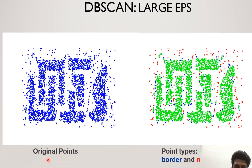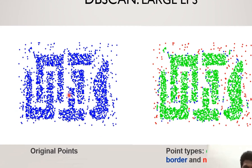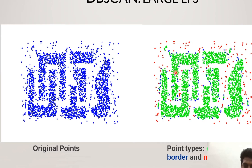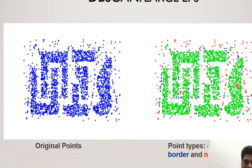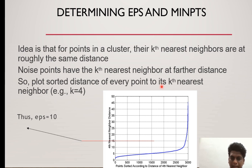Here is an example showing the original points where core points, border points, and noise points are defined. These are all the original points in the given dataset. The green color dots represent the core points. The blue color dots at the border represent the border points. All the red points are far away from the cluster regions, so we define all the red points as noise — they are neither core points nor border points.